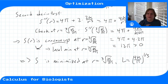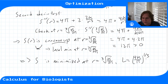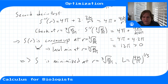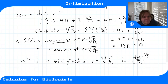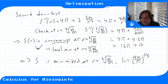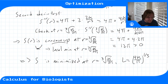So the surface area is minimized at radius r = ∛(K/2π) and length L = (4K/π)^(1/3). The question asks for the dimensions of the minimization, not the actual minimum surface area value, so we don't need to substitute back into S.